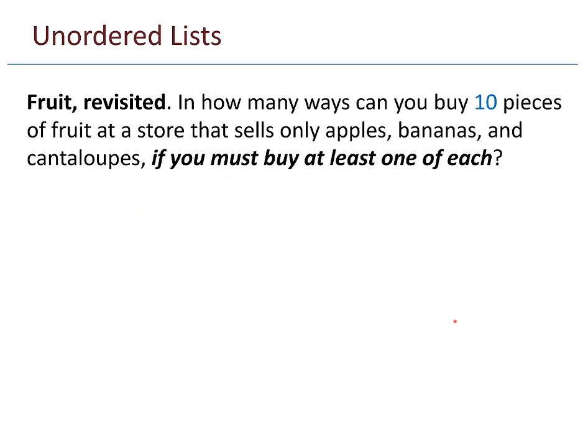The fruit problem revisited. In how many ways can you buy 10 pieces of fruit at a store that sells only apples, bananas, and cantaloupes if you must buy at least one of each? Previously, we were trying to solve this problem where I was allowed to buy zero apples or zero bananas. But now I have to buy one of each. So how can I solve this? It turns out that there's a pretty quick and easy solution. Step one, put one of each in your bag.